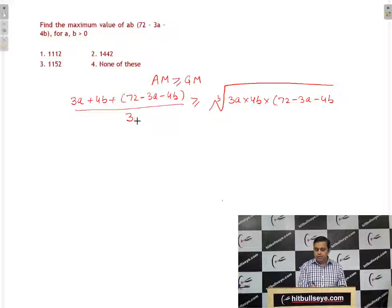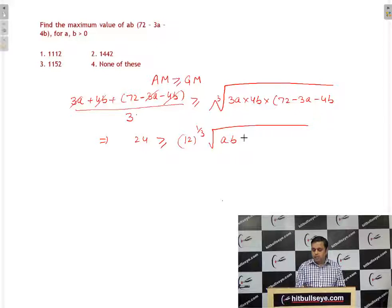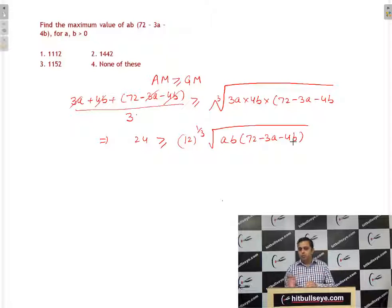Now, after simplification, the left hand side, what we are left with is 24 greater than or equal to 12 raised to power 1 by 3 into AB into 72 minus 3A minus 4B. If I cube on both sides,